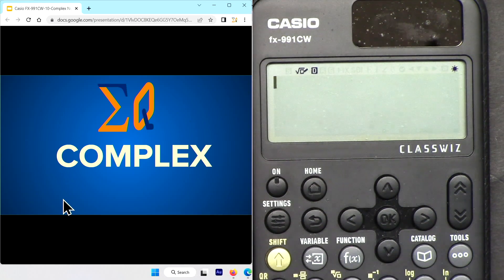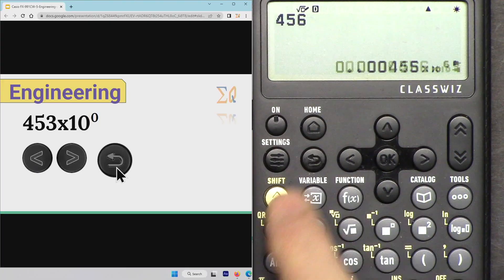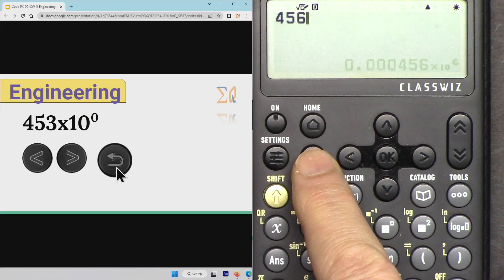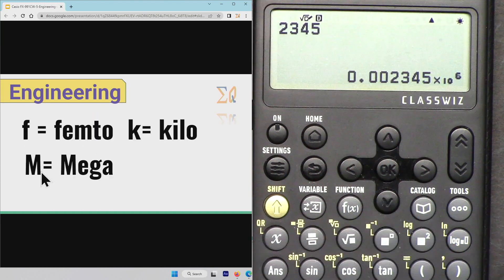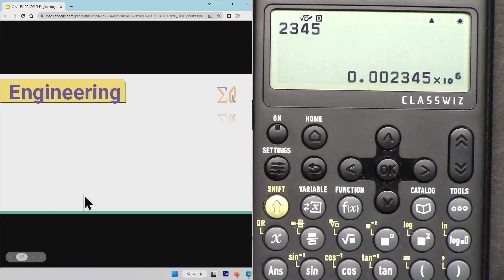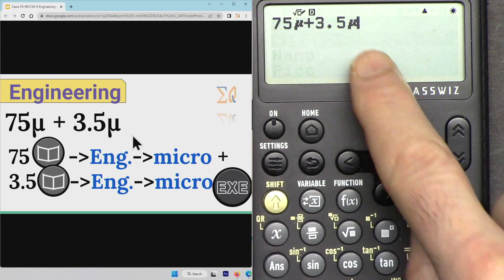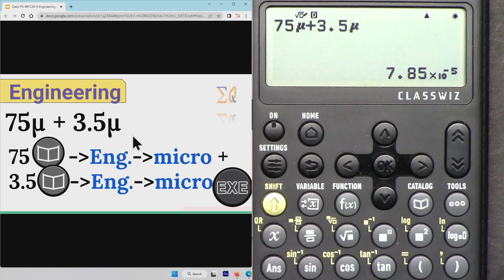Hi, welcome to a calculator tutorial from Equator. My name is Ahmad Shamshiri. In this video we are going to see how we can use Casio FX-991CW and Casio FX-570CW scientific calculator to use engineering notation: milli, micro, nano, pico, etc.